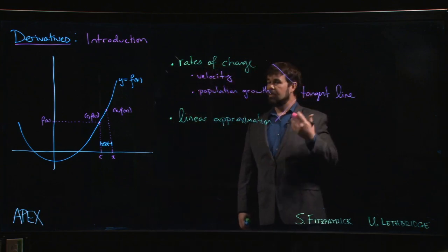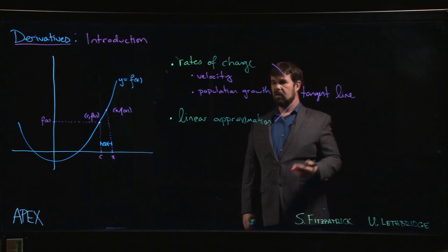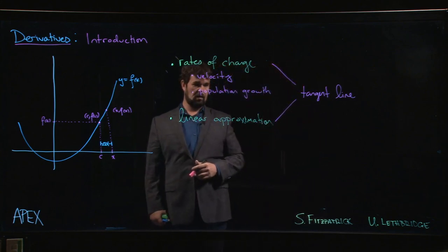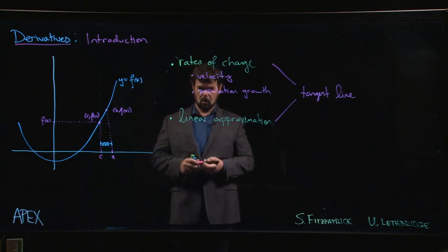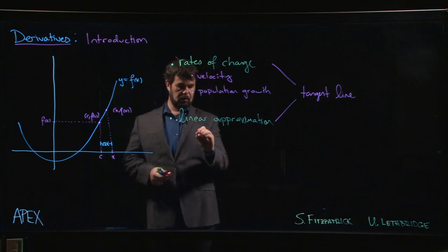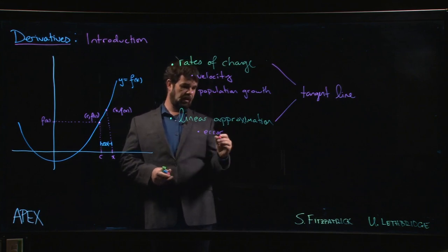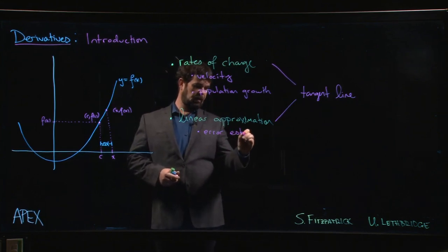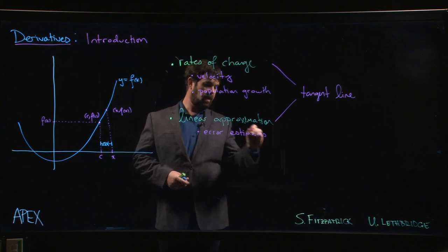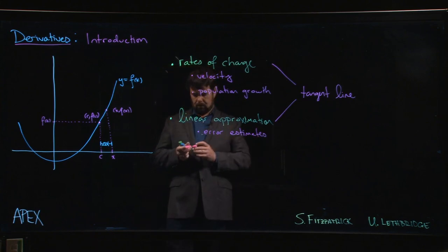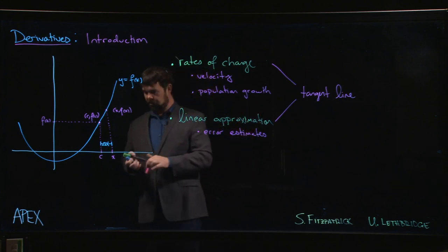Rates of change are all over the place in sciences. Anytime something is changing and you want to know how fast it's changing, you're using derivatives. Linear approximations we'll see a bit more of later on, including in doing things like error estimates if you've done any laboratory science.